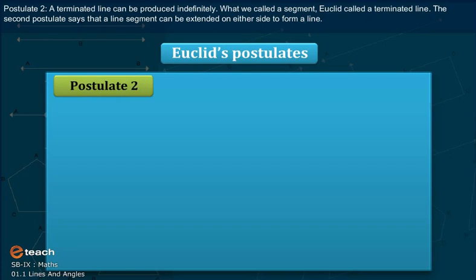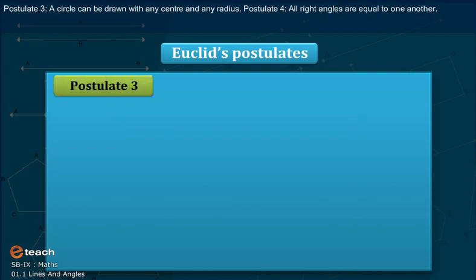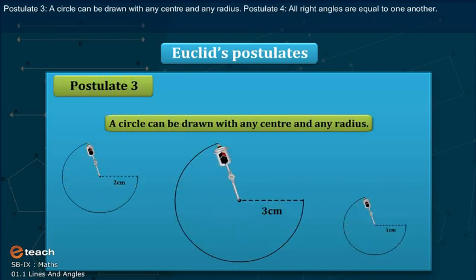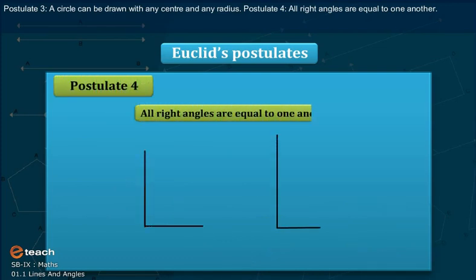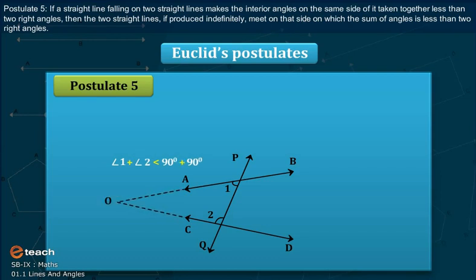Postulate 2: A terminated line can be produced indefinitely. What we call a segment, Euclid called a terminated line. A line segment can be extended on either side to form a line. Postulate 3: A circle can be drawn with any center and any radius. Postulate 4: All right angles are equal to one another. Postulate 5: If a straight line falling on two straight lines makes the interior angles on the same side less than two right angles, then the two straight lines, if produced indefinitely, meet on that side on which the sum of angles is less than two right angles.